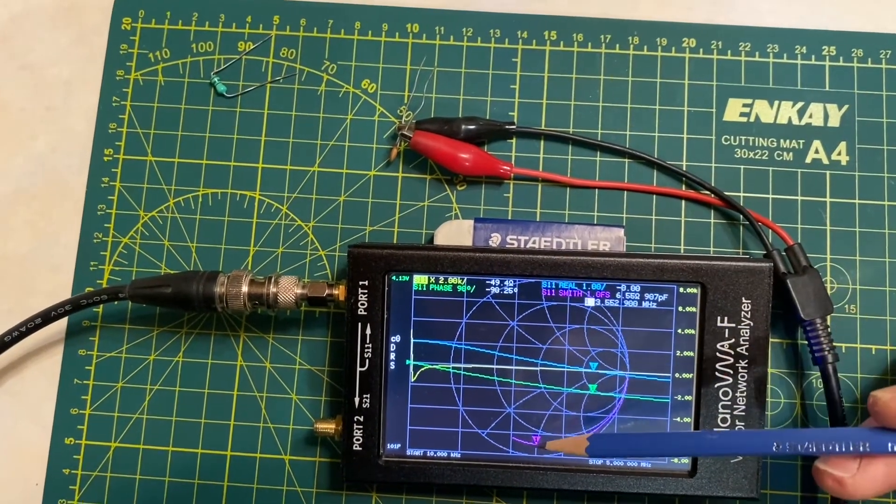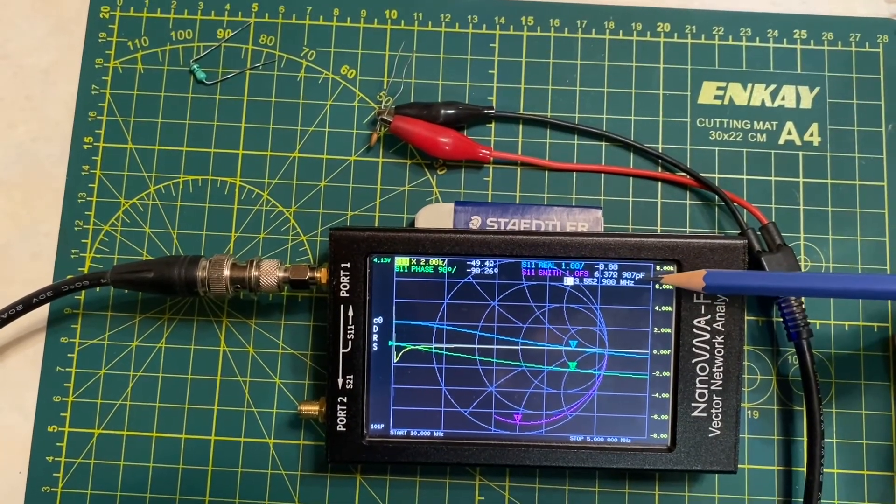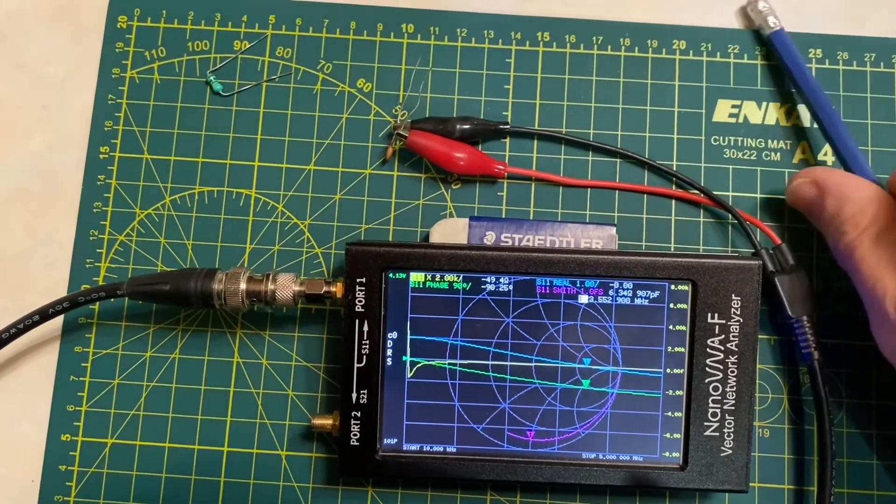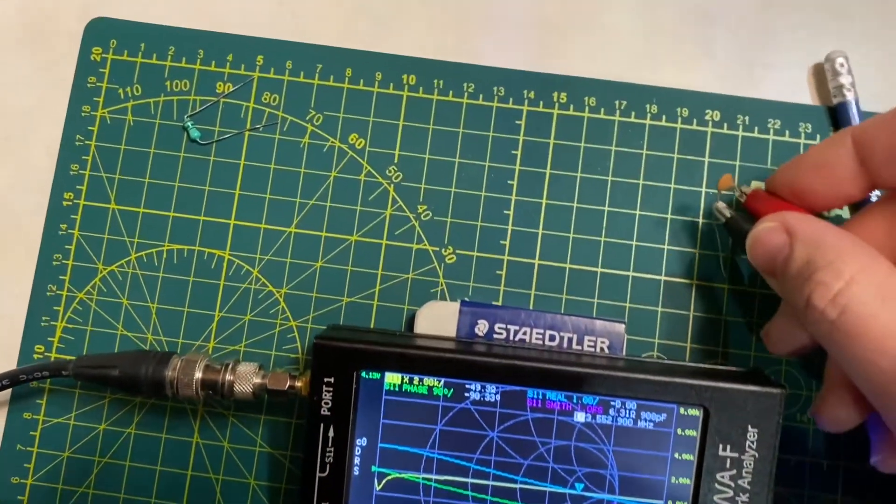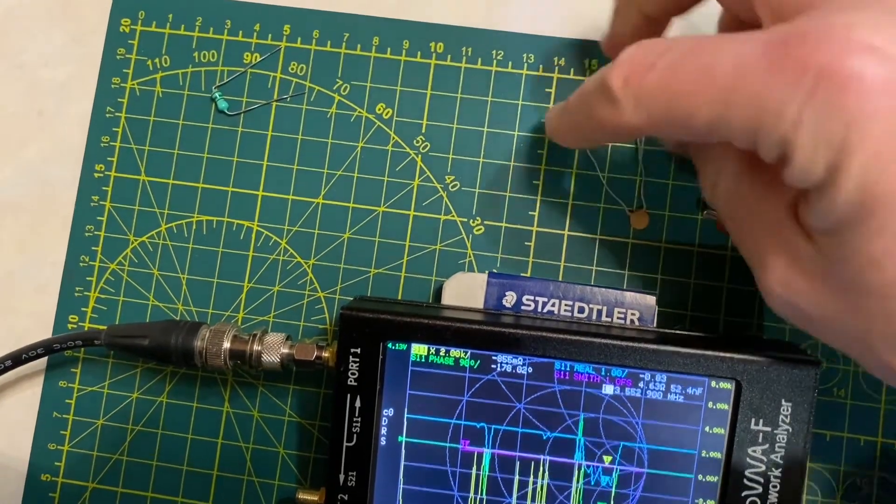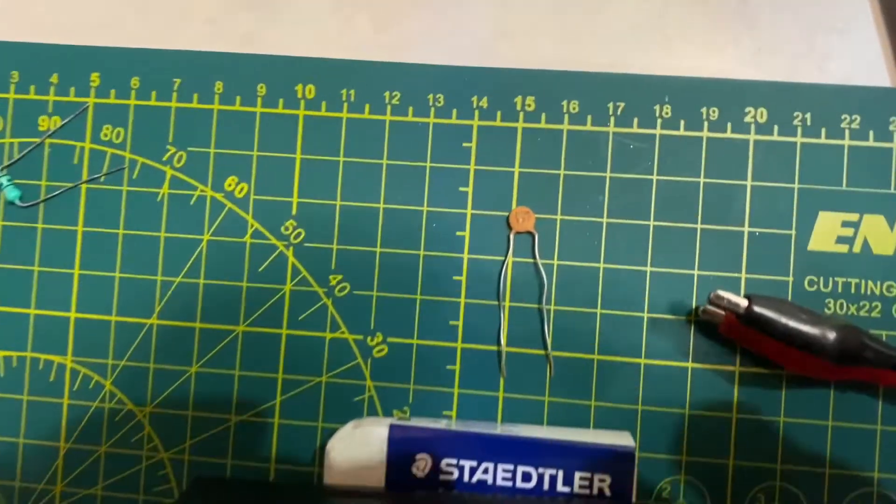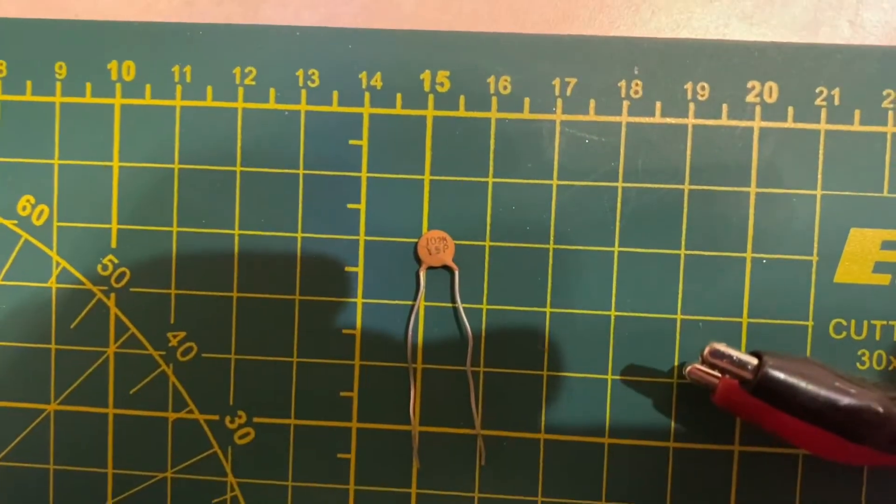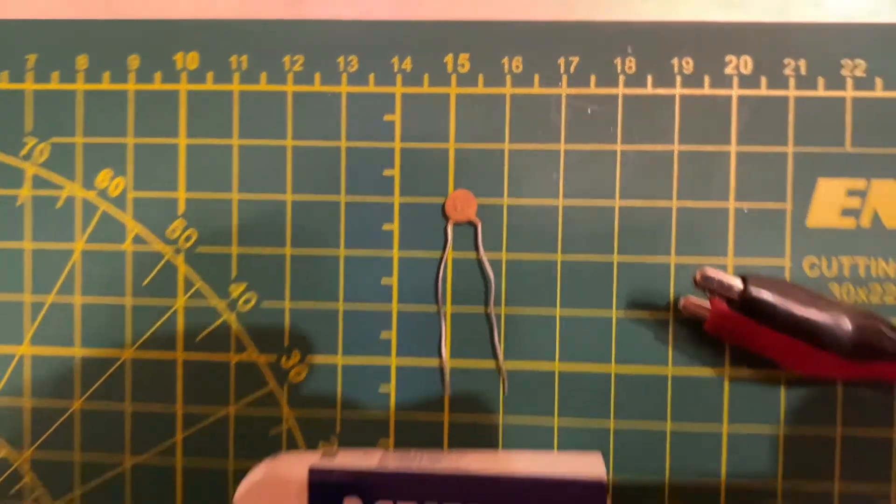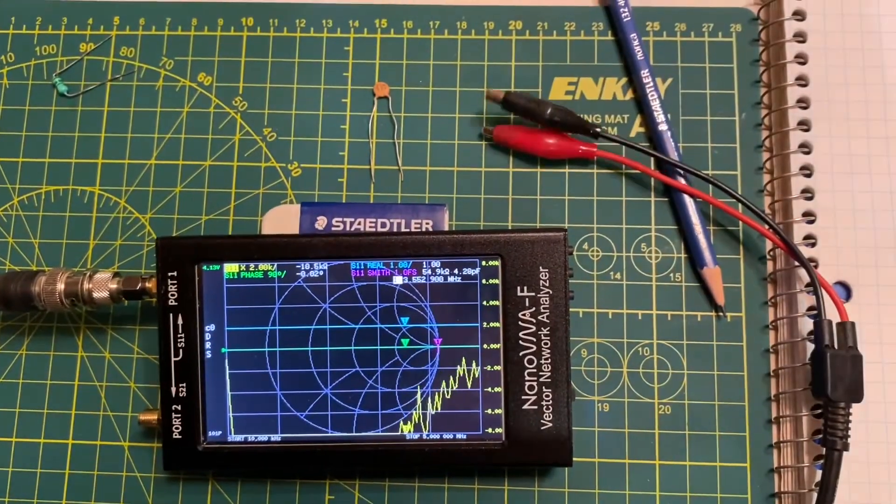There's 90 degrees, there's our reactance of the capacitor is fairly close to 50 ohms, and what do we read? 907 picofarads. Let's take a look at this capacitor and see what it is. I'll unclip this and we'll flip over here and we'll read that: 1-0-2. So that's a 1000 picofarad capacitor.